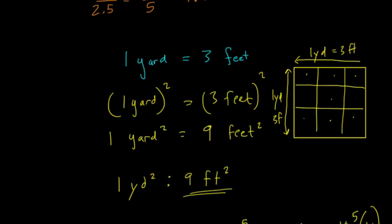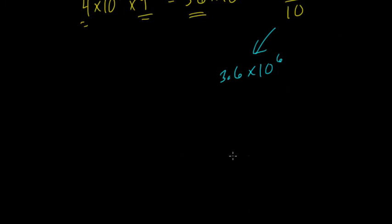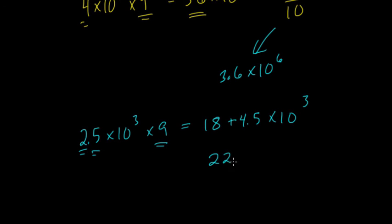And the second expression they gave us is 2.5 times 10 to the 3rd. Again, multiply this by 9. What happens? Well, 9 times 2 is 18, 9 times 1 half is 4.5, so we add those two together. It's still times 10 to the 3rd. And then we get 22.5 times 10 to the 3rd.